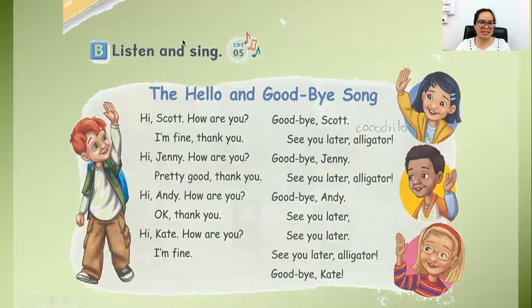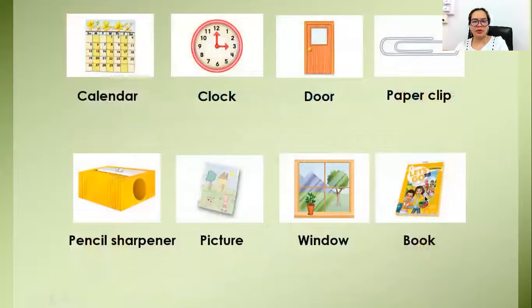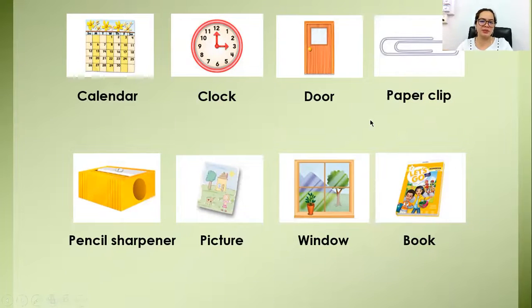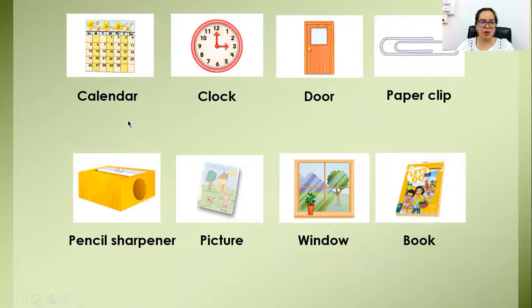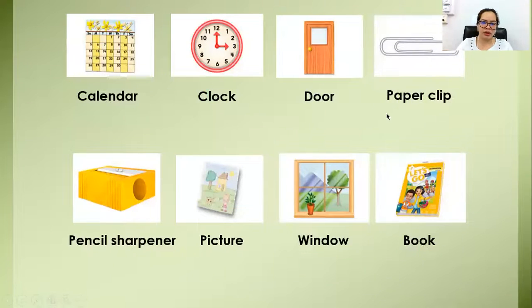So last time we sang this song. You can sing this song now. So now let's go to this one. We are going to review our vocabulary. So these pictures and words you can see on your student book. We are going to read the words first: calendar, clock, door, paperclip, pencil sharpener, picture, window, book.